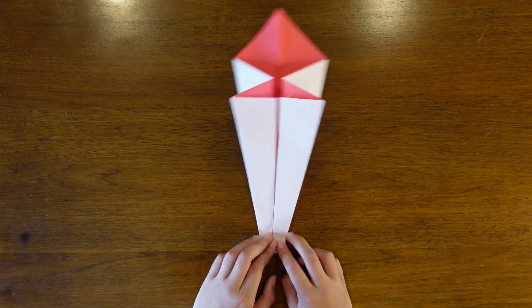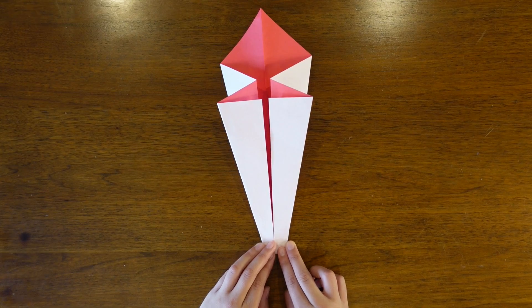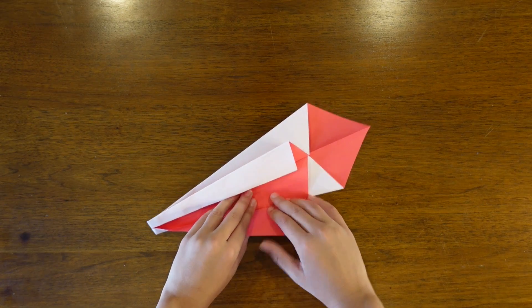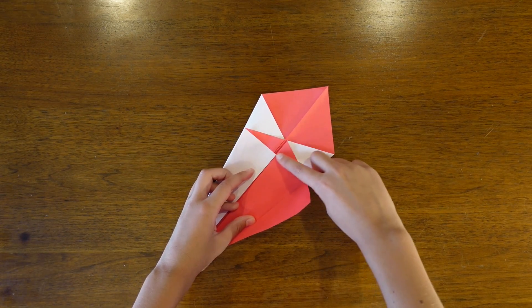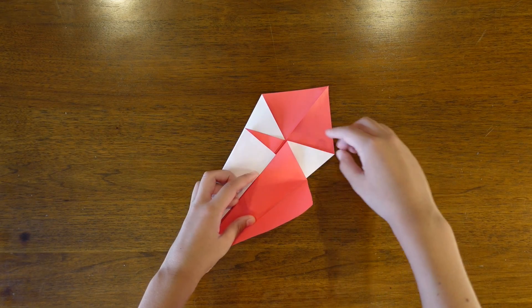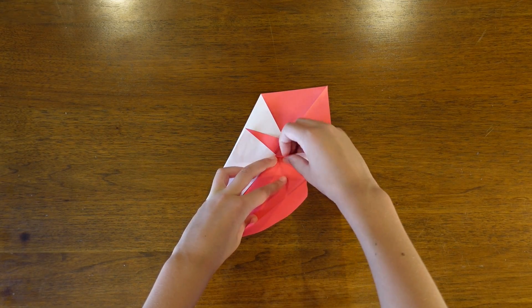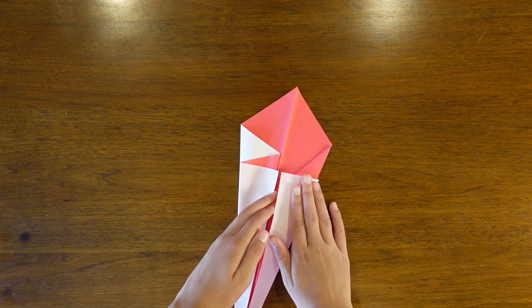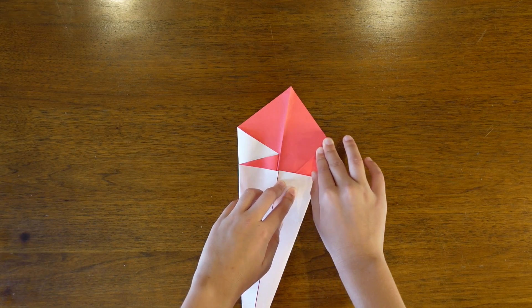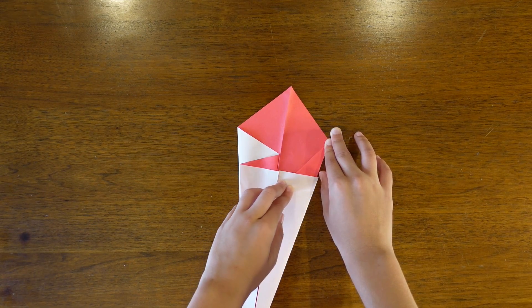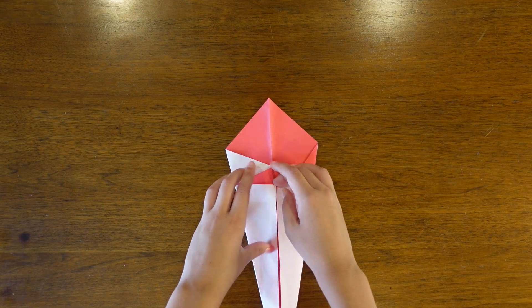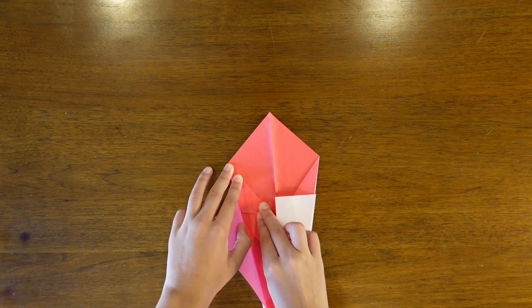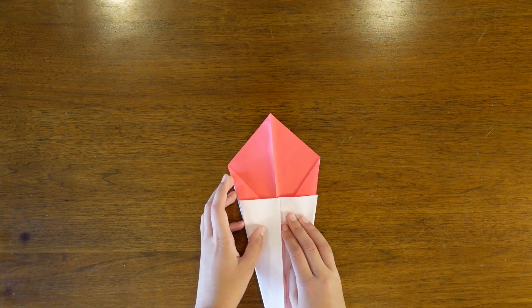Now turn it over. We're going to open up the first flap a little bit and fold the edge to the other edge. Now crease that and then fold the paper back on top of the fold. You're going to do that on the other side. So fold the edge to the other edge and then fold the flap back over the other flap.